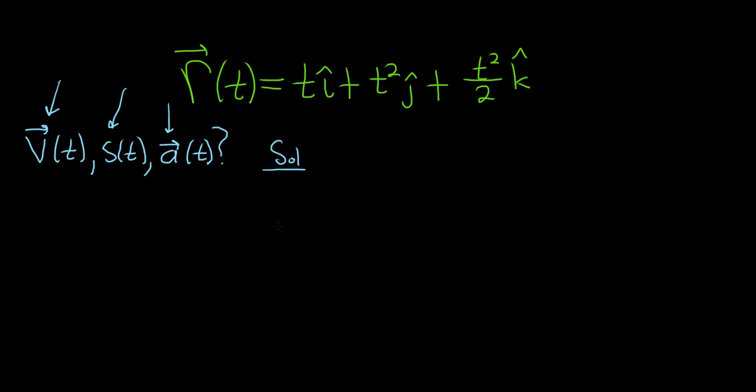To find the velocity function, we take the derivative of position. The velocity v(t) equals the derivative of r. Taking the derivative of t, we get 1, so that's i hat, plus the derivative of t squared is 2t, so 2t j hat.